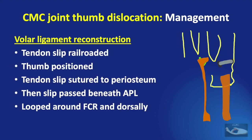After attaching the volar end of the 28-gauge wire to the proximal end of the FCR tendon slip, the tendon is pulled through the hole from the volar side to the dorsal side. At this point, the thumb is placed in abduction and extension.